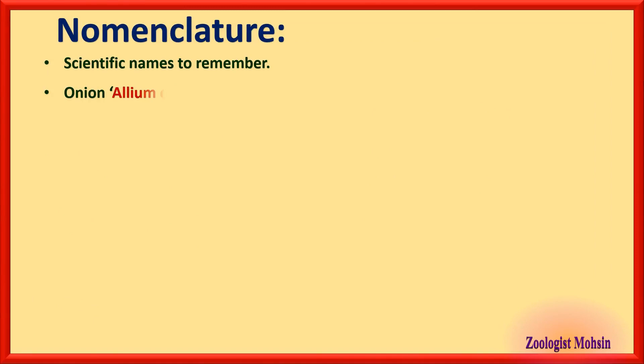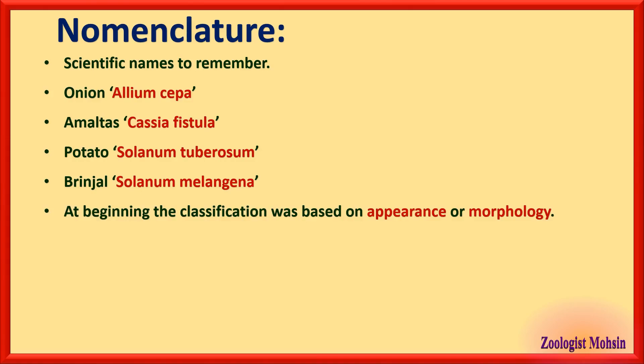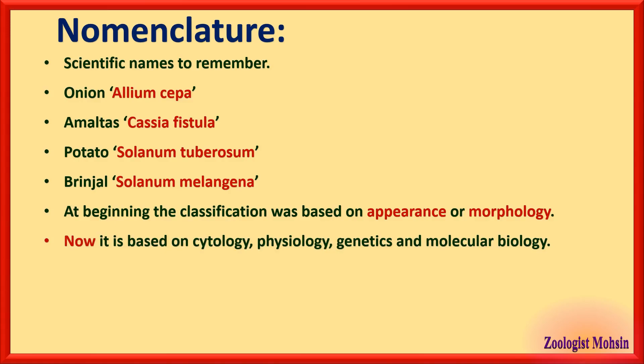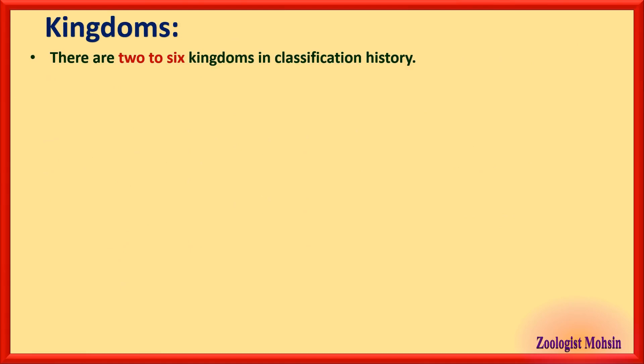Scientific names to remember: onion is Allium cepa, Amaltas is Cassia fistula, potato is Solanum tuberosum, and brinjal is Solanum melongena. At the beginning, classification was based on appearance or morphology. Now it is based on cytology, physiology, genetics, and molecular biology — that is the modern approach to classification.